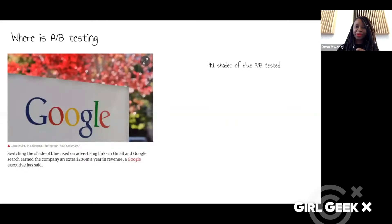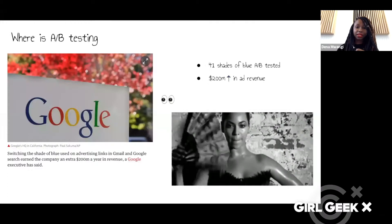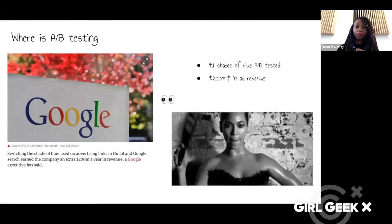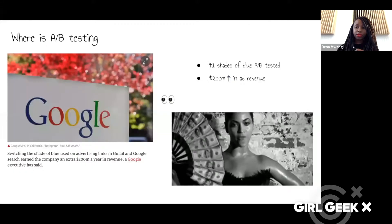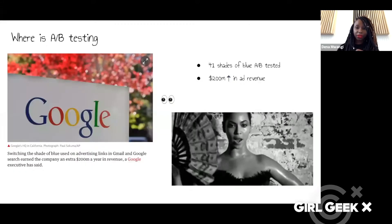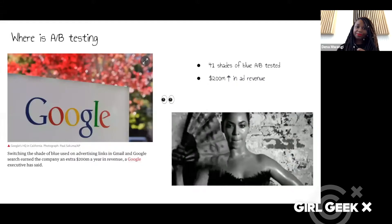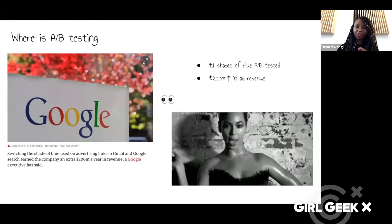Another quick example of where A/B testing is used is a famous one from Google, where they weren't quite sure which shade of blue to use. I think things like this are why A/B testing has a bad rap — people think, are we really going to spend time thinking about shades of blue? But actually, by figuring out which one worked best for their users, this translated to an increase of $200 million in ad revenue. So A/B testing can end up being quite profitable.